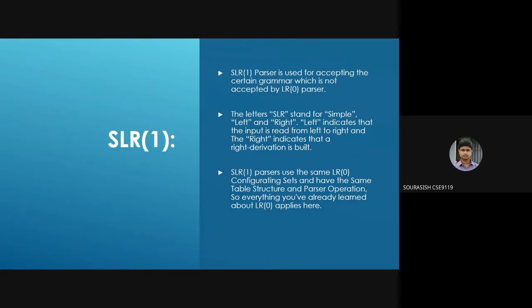The steps for constructing the SLR(1) parsing table are similar to the LR(0) table: first write the augmented grammar, second find the LR(0) collection of items, third find the follow of the left-hand side of productions, and fourth define the goto and action functions. SLR(1) is generally used for accepting certain types of grammars not accepted by LR(0), using the same configuration set as LR(0) with similar table structure.